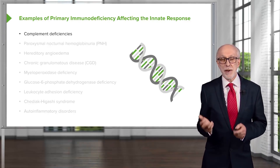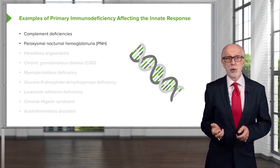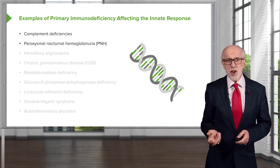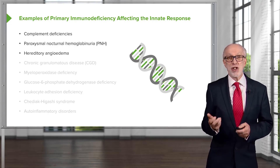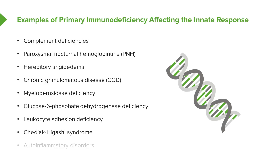Examples of primary immunodeficiencies that affect the innate response include complement deficiencies, paroxysmal nocturnal hemoglobinuria, hereditary angioedema, chronic granulomatous disease, myeloperoxidase deficiency, glucose-6-phosphate dehydrogenase deficiency, leukocyte adhesion deficiency, Chediak-Higashi syndrome, and a number of auto-inflammatory disorders.